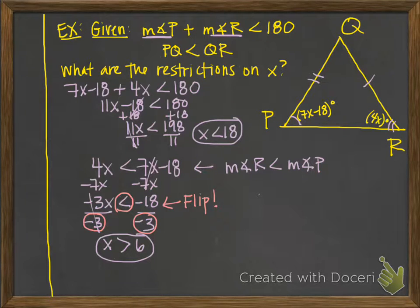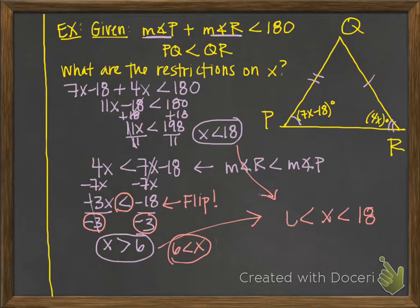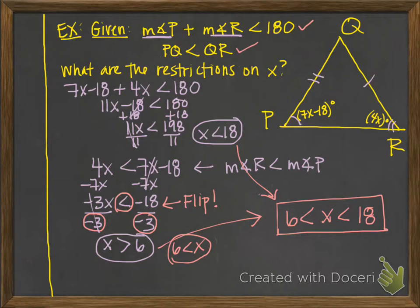Putting the two inequalities together as a compound inequality: 6 < x < 18. The 18 goes on the right, and turning x > 6 around gives 6 < x. So when x is between 6 and 18, both given conditions are true. Those are the notes for section 3.7 — I'll see you in class.